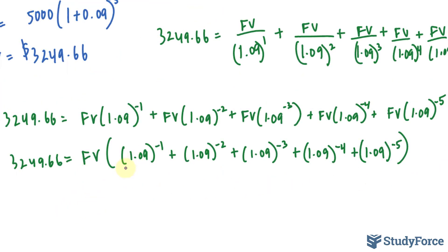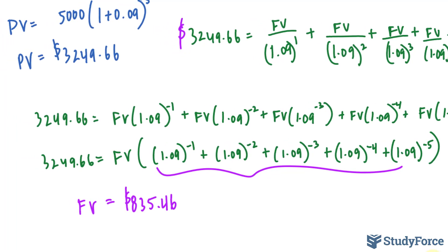The idea now is to sum all this up and divide both sides by that sum to isolate for FV. If you do that correctly, you should end up with a final answer that is equal to 835.46. This is an equivalent future value that will give us a sum of present values that equals to the present value of a $5,000 debt five years from today.